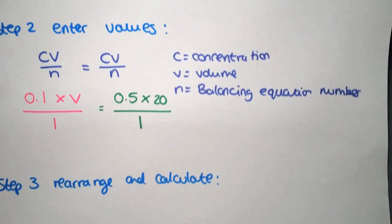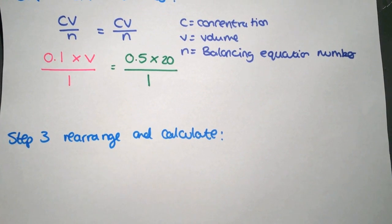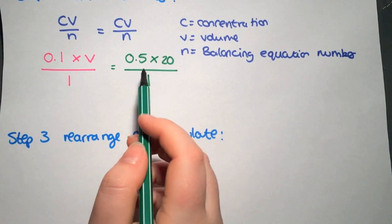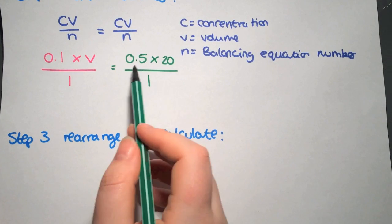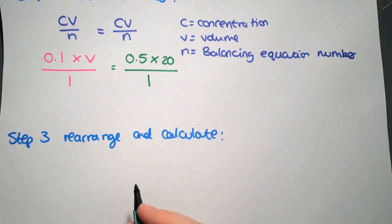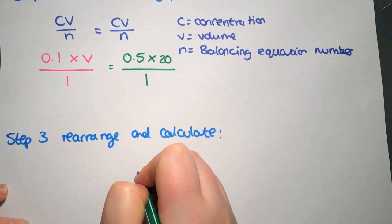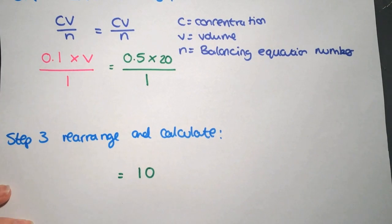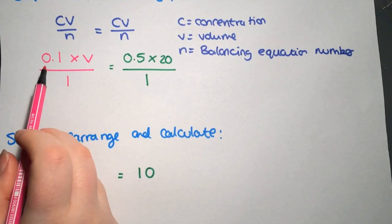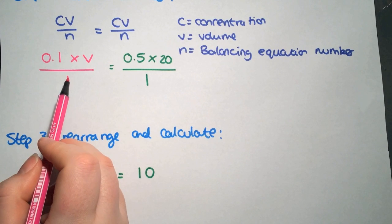The next step is to rearrange and calculate. If we look at the right hand side you can see that all three parts are filled in, so we can fully calculate that side there. That will give us a value of 10. So we have 10 on the right hand side. On the left hand side we've got 0.1 times V divided by 1.